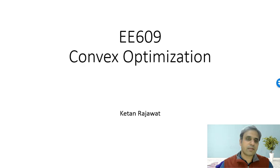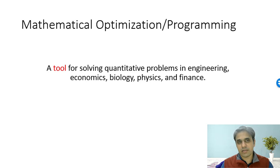Let us first begin with defining mathematical optimization, or it is also called mathematical programming, which is basically a tool for solving quantitative problems that arise in engineering, economics, biology, physics, finance, etc. All of these quantitative problems that arise in various kinds of areas have something in common and that is what the mathematical optimization captures.